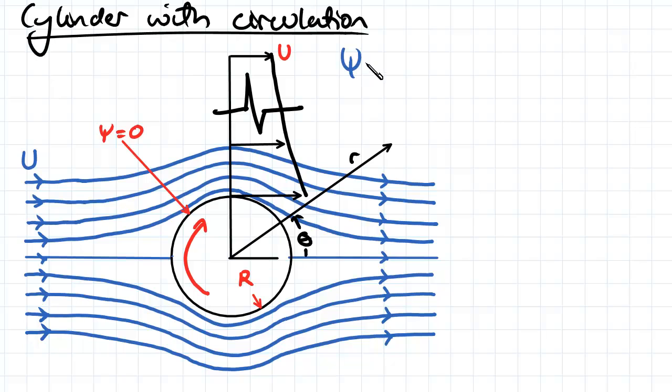So our stream function is going to be equal to Ur(1 minus r squared over r squared). So very similar to what we had for the flow over a cylinder. But the second term here is the circulation divided by 2π times the log of r.